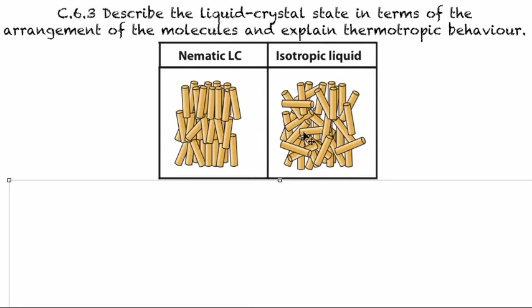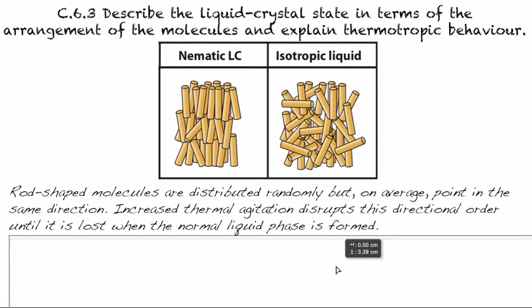Whereas with normal isotropic liquids, on average there's no alignment and they're free to move. Rod-shaped molecules are distributed randomly but on average pointing the same direction.